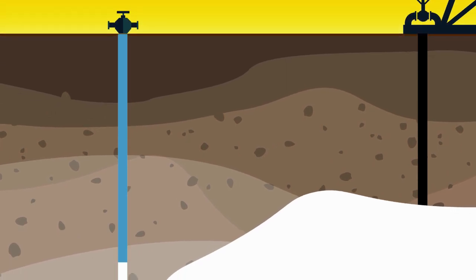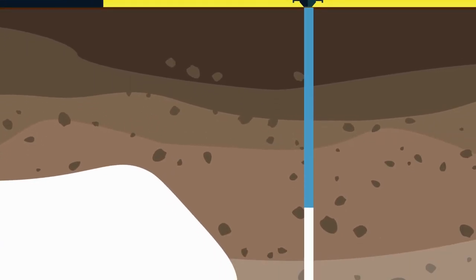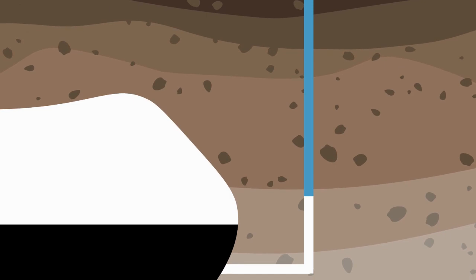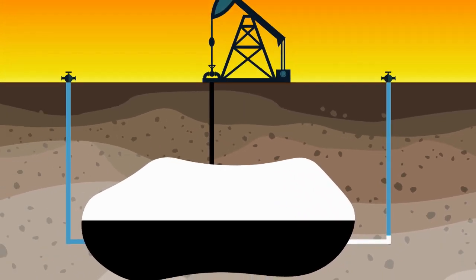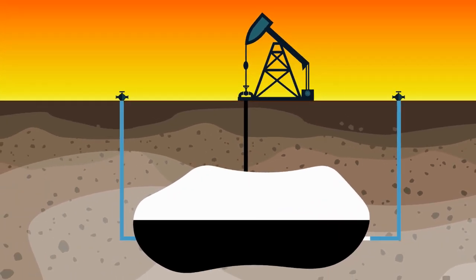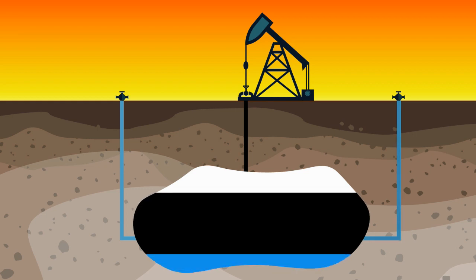The conditions in the reservoir determine the rate at which the fluid and tracers move. The concentration of the tracer chemical over time in the fluid produced provides a wealth of information about the reservoir, including the flow of the injected fluid, the sweep efficiency of the EOR operation, and the quantity of oil remaining in the swept volume.